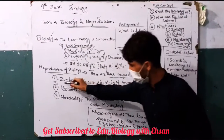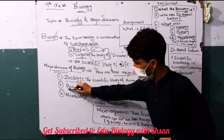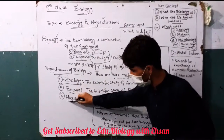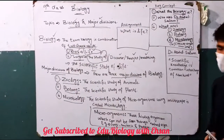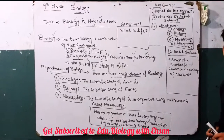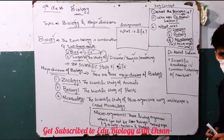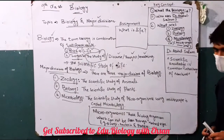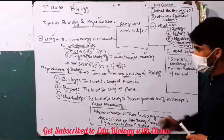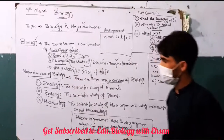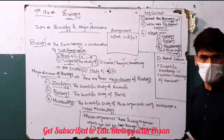One is zoology, and secondly is botany, and thirdly is microbiology. Zoology is the study of animals, botany is the study of plants, and microbiology is the study of micro-organisms.